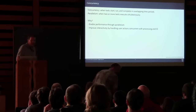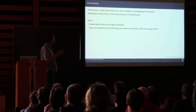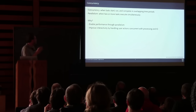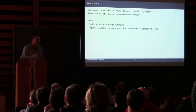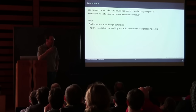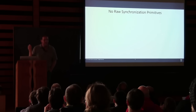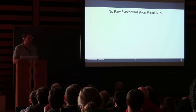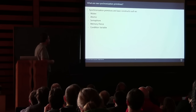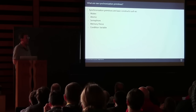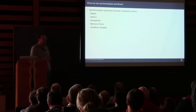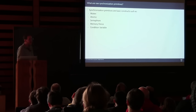Some definitions: concurrency is when tasks start, run, and complete in overlapping time periods; parallelism is when two or more tasks execute simultaneously — cores give you parallelism. We want concurrency because it enables performance through parallelism and improves interactivity — you don't want to block the user. My goal in this chapter is no raw synchronization primitives: mutexes, atomics, semaphores, memory fences, condition variables. These are all too low-level for day-to-day programming, and yet I see lots of code where developers just slap a mutex on a shared object and bang on it with threads.